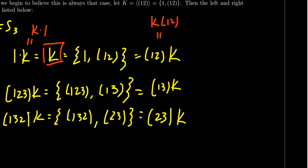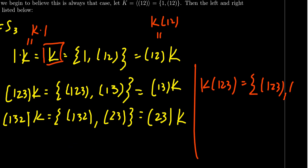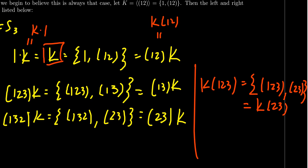Now let's compute the right cosets. Taking K times (1 2 3): identity times (1 2 3) = (1 2 3); then (1 2) times (1 2 3) — 1→2, 2→3, so 1 goes to 3; 2→1, 1 is fixed; 3→1→2, so we get the 2-cycle (2 3). So K times (1 2 3) = {(1 2 3), (2 3)}. Notice the disagreement: the left coset (1 2 3)K contains the 2-cycle (1 3), but the right coset K(1 2 3) contains the 2-cycle (2 3). So (1 2 3)K does not equal K(1 2 3).